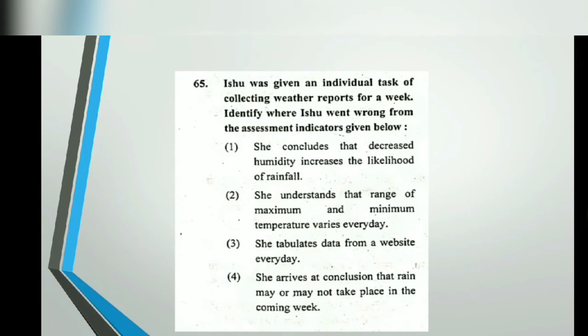The next question: Ishaan was given an individual task of collecting weather reports for a week. He is a child assigned to observe weather reports for a week. In the assessment, he observed that when humidity decreased, the chances of rainfall increased — option A is wrong here because when humidity increases, the chances of rainfall increase. So option A is the correct answer to identify as the incorrect observation.